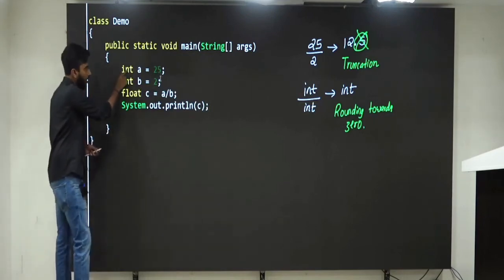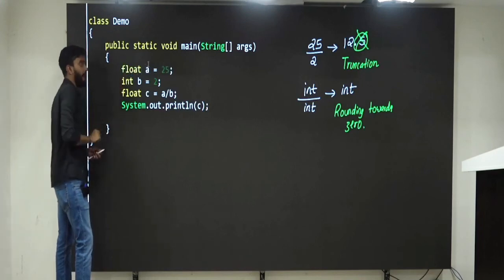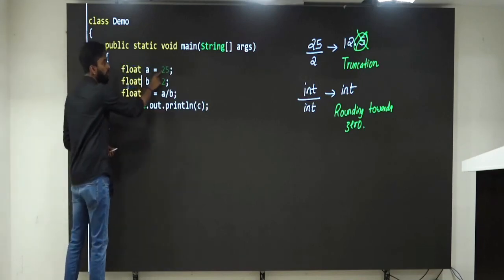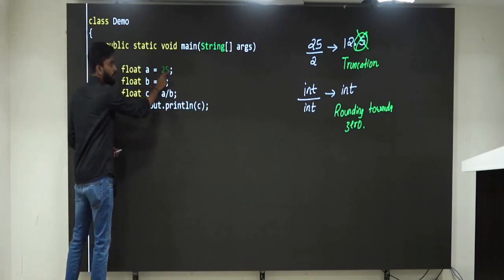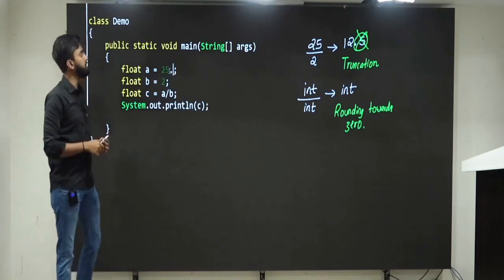Watch it, I will make A also as float, I will make B also as float. Clear till here? Now, float means 25, I will not tell 25.0. Very good, 0.0.